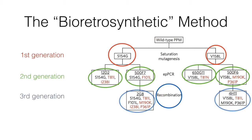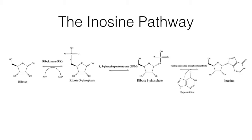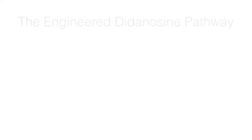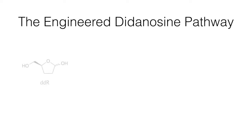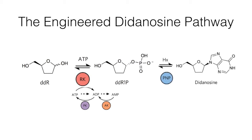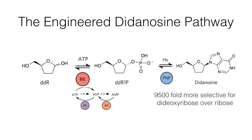Using didanosine production as the sole criterion for selection, they optimized each protein in the pathway over several generations. The final designed pathway was one step shorter than the inosine pathway, skipping an isomerization by phosphorylating the starting material at the 1-carbon as opposed to the 3-carbon. Dideoxyribose is phosphorylated by ribokinase and a set of ATP recycling enzymes that maintain a low and steady ATP level. The phosphorylated product is then converted into didanosine by attaching hypoxanthine via PNP. The final pathway was 9,500 times more selective for dideoxyribose and produced 50 times more didanosine than the original one, suggesting this is a viable alternative to traditional synthetic chemistry.